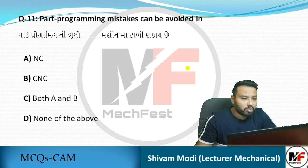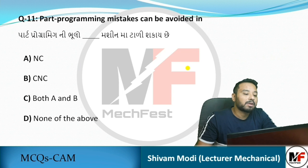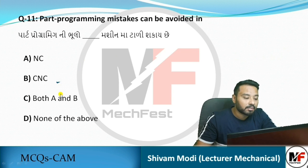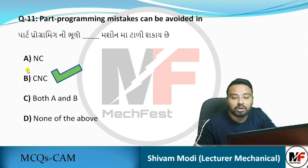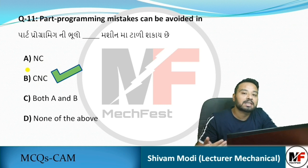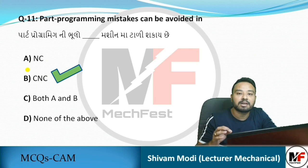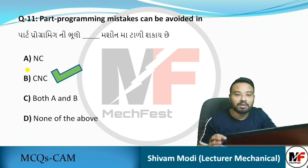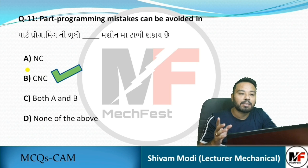Next MCQ: Part programming mistakes can be avoided in which system? The answer is CNC – Computerized Numerical Control – because in CNC we can correct part programming mistakes using the simulation technique. Through simulation, we can run the part program virtually and check for errors before actual machining.